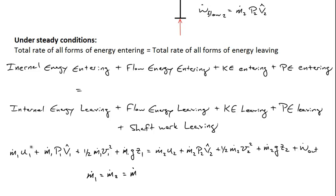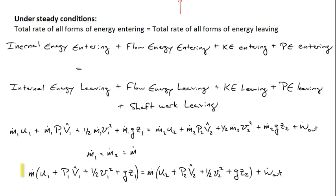I factored out the mass flows. One thing to keep in mind is that these terms, u1 + p1 v_hat_1 and u2 + p2 v_hat_2, are often seen in analysis of thermodynamic systems. They're seen so much that for a matter of convenience, we'll say that u1 + p1 v_hat_1, we're going to call it h1. We'll give that h a name, we'll call it enthalpy.